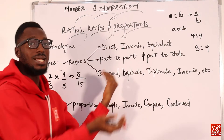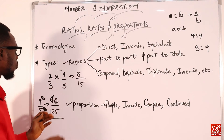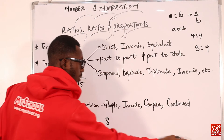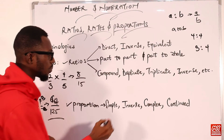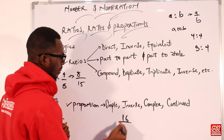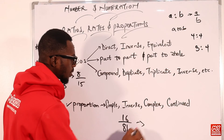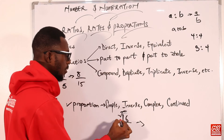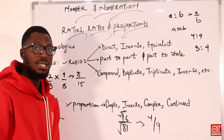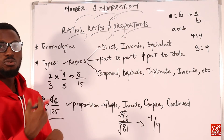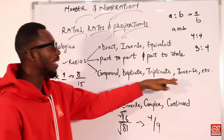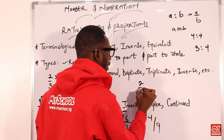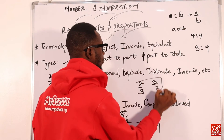Then there are subduplicates, which are the square root of the ratio. For example, the subduplicate of 16 over 81 would be the square root of 16 over the square root of 81, giving 4 over 9. The subtriplicate would be the cube root of the values being compared. Inverse means a switch in position: if I have 2 over 3, the inverse will be 3 over 2.